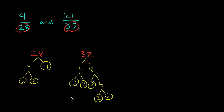So we found all of our prime factors. Now we're going to go to step number 2: multiplying out the prime factors. The first step is to start with the one that has more prime factors. So 28 has 3 prime factors, and 32 has 5 prime factors. So I'm going to write 32 first.